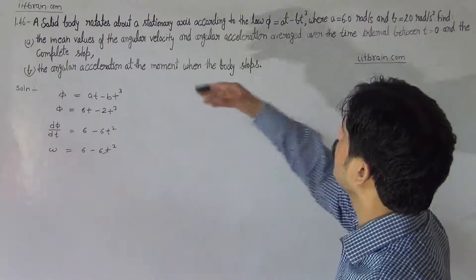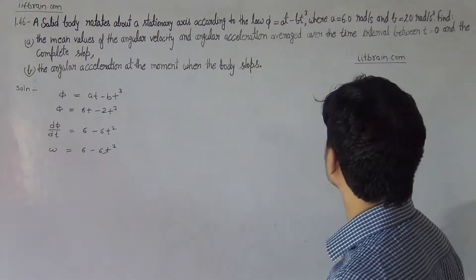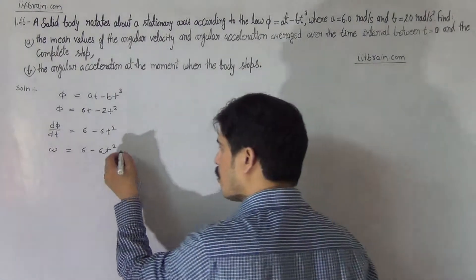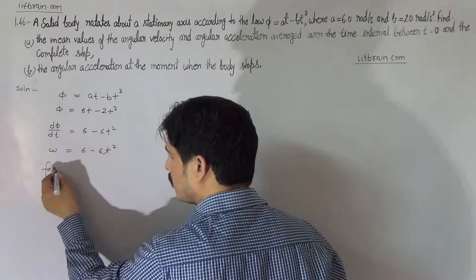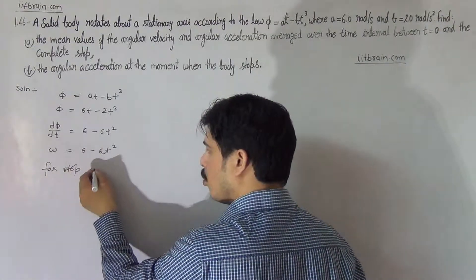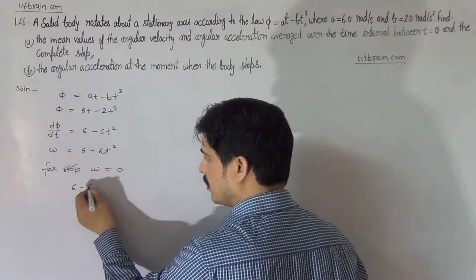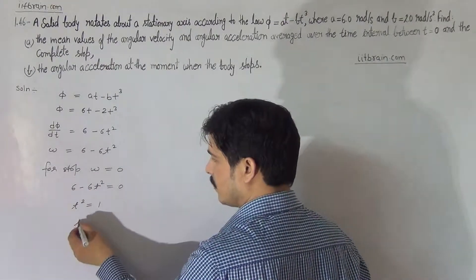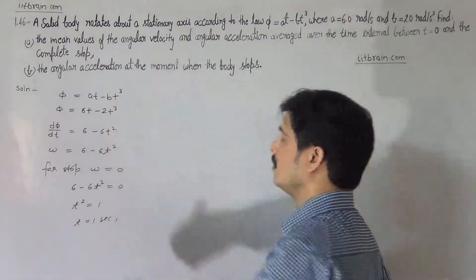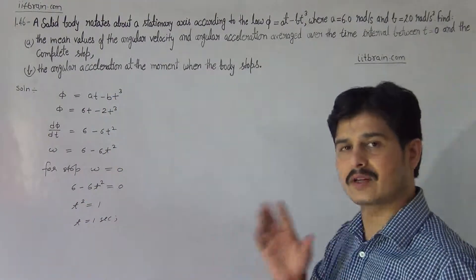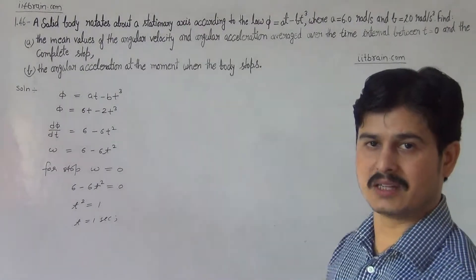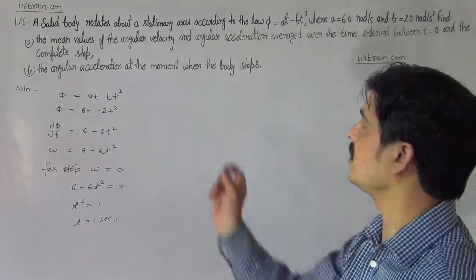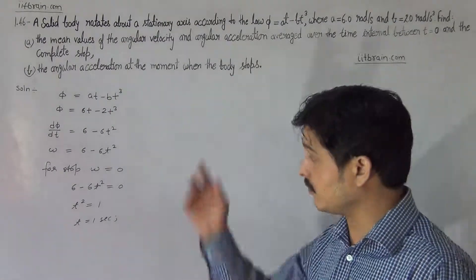The question asks for the mean angular velocity and angular acceleration averaged over the time interval from T = 0 to complete stop. For complete stop, omega will become 0, so 6 - 6T² = 0, giving T² = 1, meaning T = 1 second. It is clear that after 1 second the particle will completely stop. So we have to calculate the mean value of angular velocity between 0 and 1 second.